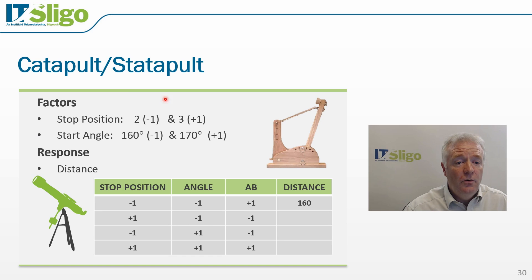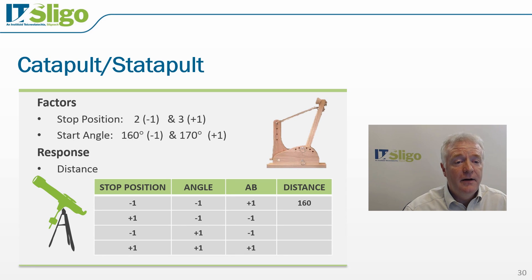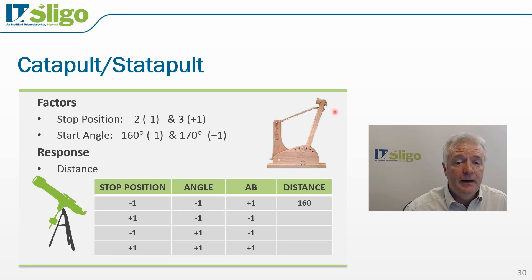We are going to take stop position 2 and stop position 3. Stop position 2 will be our low level or minus 1, and stop position 3 will be our high level or plus 1. Our second factor is the start angle, which we will evaluate at two levels: 160 degrees and 170 degrees. The low will be 160 degrees and the high will be 170 degrees, and we can achieve this angle by pulling the lever back in this direction.